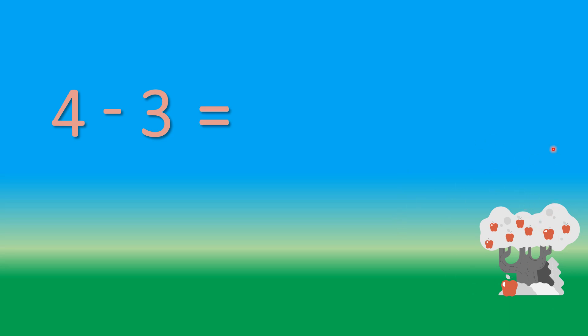How many trees are there? Only 1. So equals to 1. The answer is 1. 4 minus 3 equals to 1.